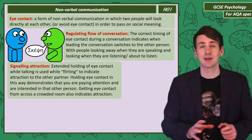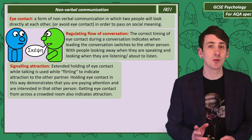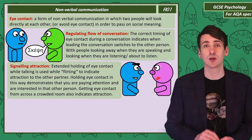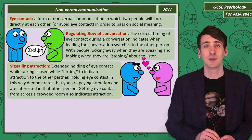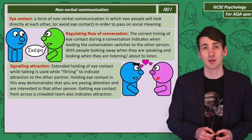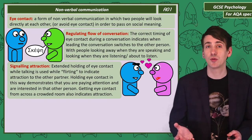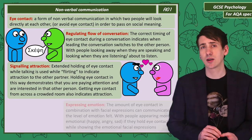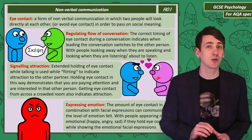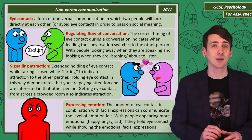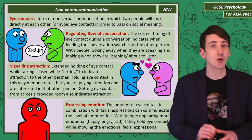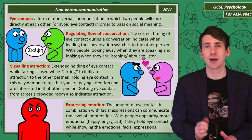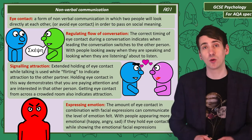Eye contact also signals attraction. Two people flirting will often hold eye contact for an extended period, indicating interest in the other person. Eye contact across a crowded room is also a signal of initial attraction. The level of eye contact in combination with other body language signals indicates how much emotion someone feels — people appear more angry, happy or sad if they hold eye contact.